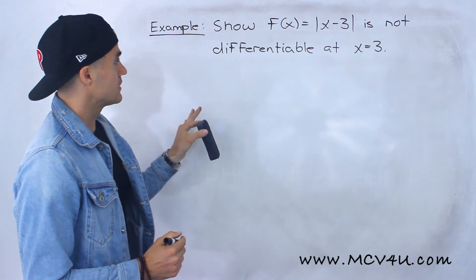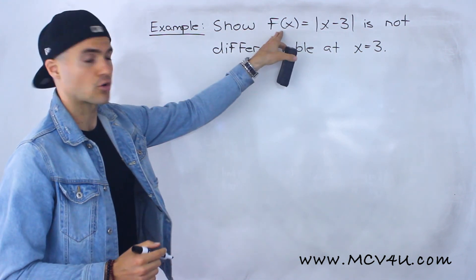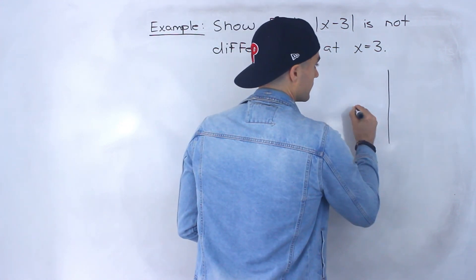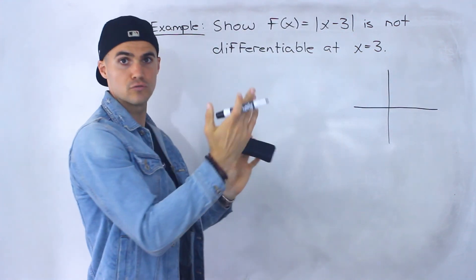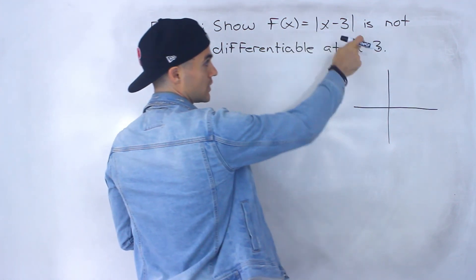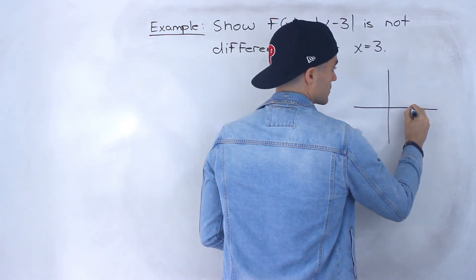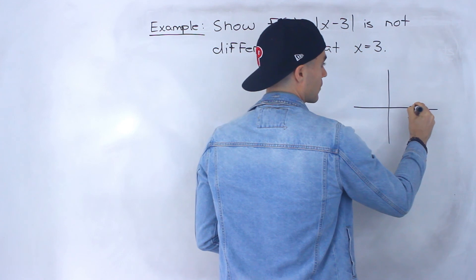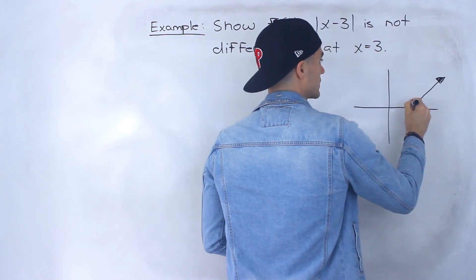Before we get into the mechanics of showing it's not differentiable, let's graph this function. It's basically the absolute value function shifted three units to the right. And so at that x value of 3, there's going to be a corner there. The function just looks like this.